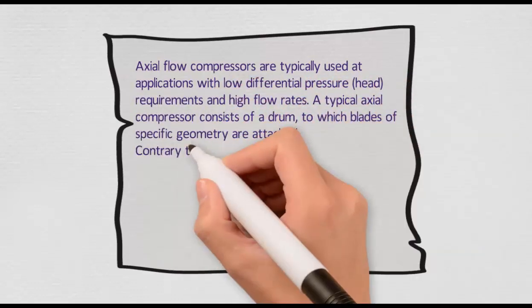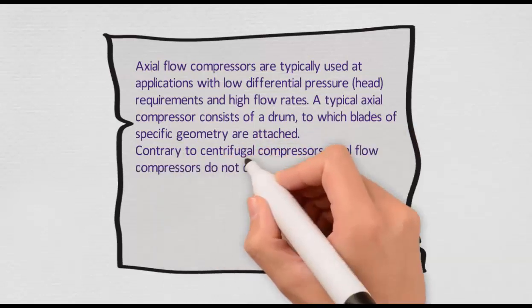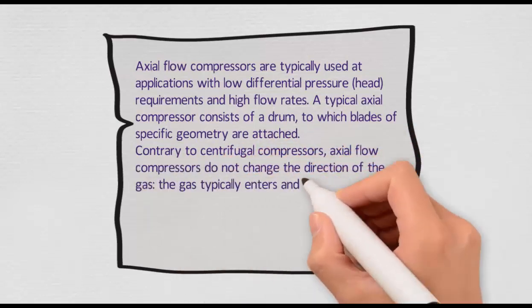A typical axial compressor consists of a drum to which blades of specific geometry are attached.